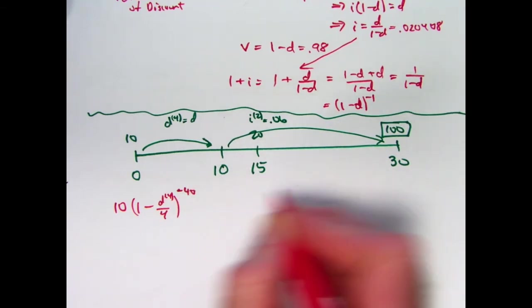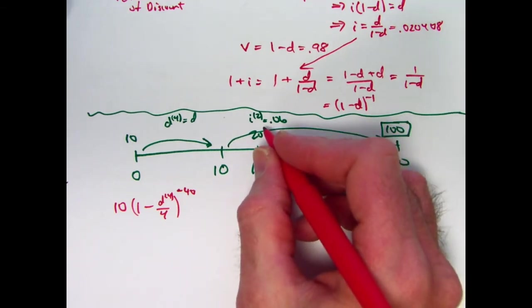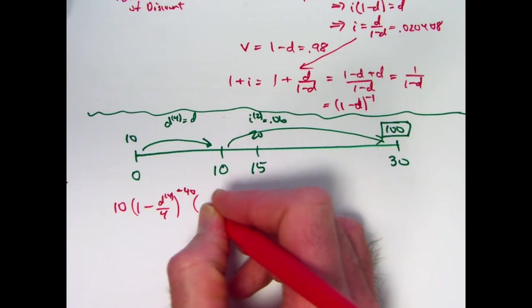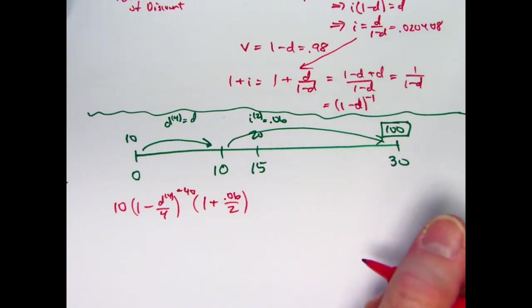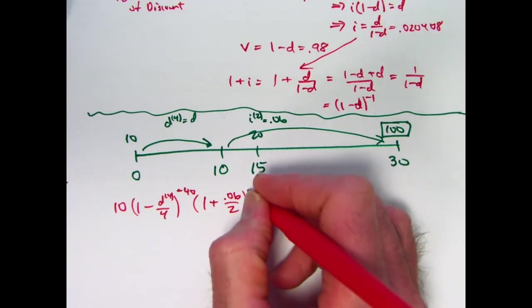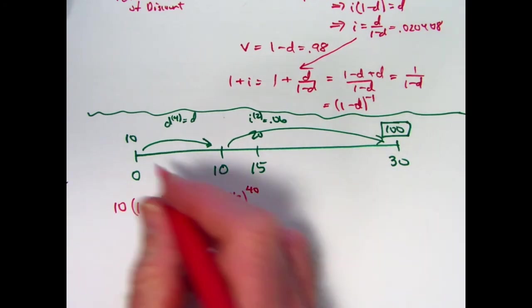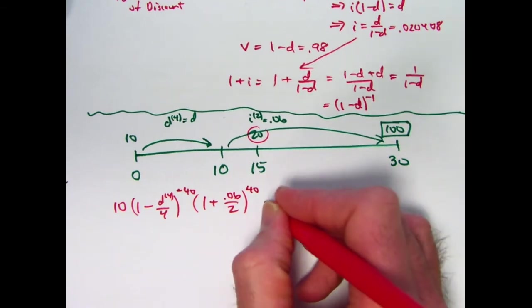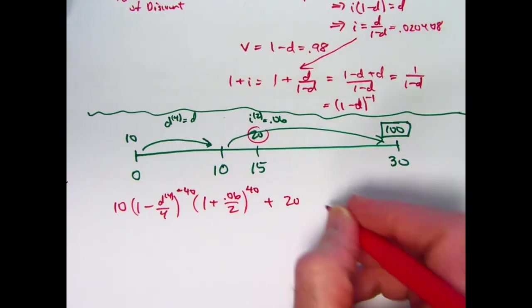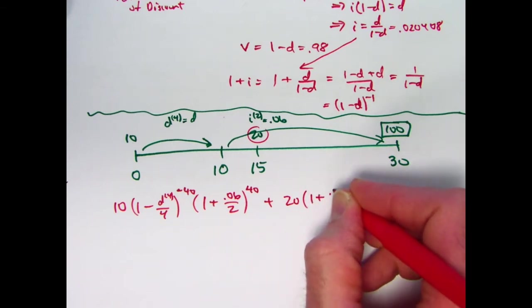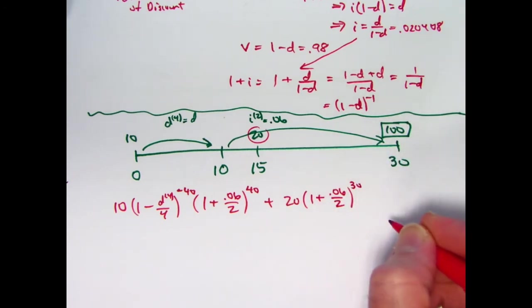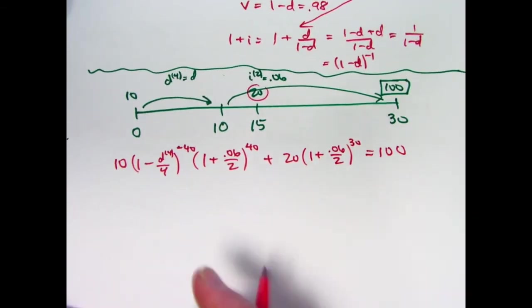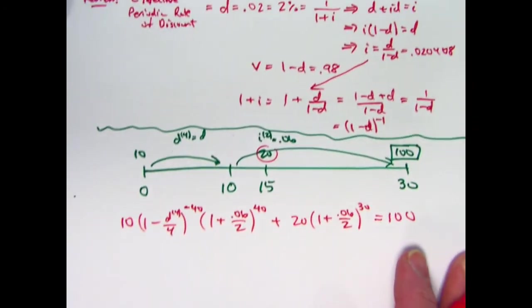Then I need to push that forward in time another 20 years, according to the fact that I've got a semi-annual rate of 6%. So I have 1 plus 0.06 divided by 2. For 20 years, compounded semi-annually, you're going to have 20 times 2, 40 compounding periods for that one. So this is going to be the future value of the 10. What about the 20 at time 15? That just gets pushed forward in time by 15 years with the 6% rate compounded semi-annually. 15 years compounded semi-annually is going to be 30 periods. This has to equal 100. And now we solve this equation for d4, and that will be the same as what d is up there. d4 does equal d down here.